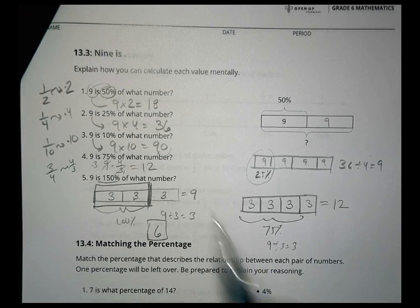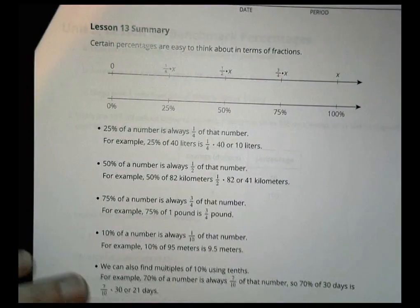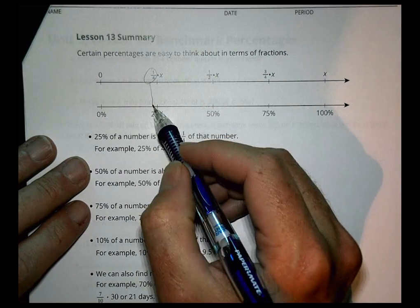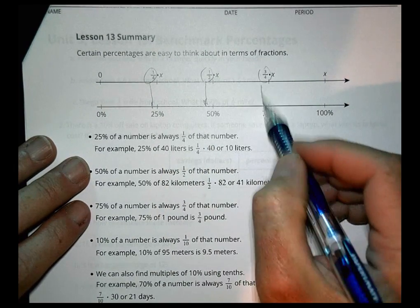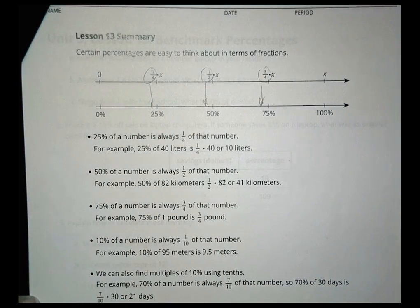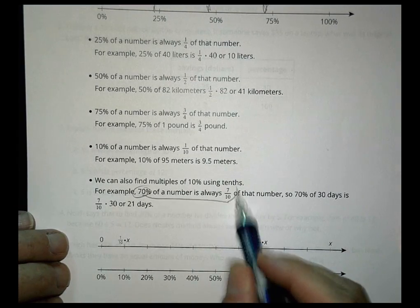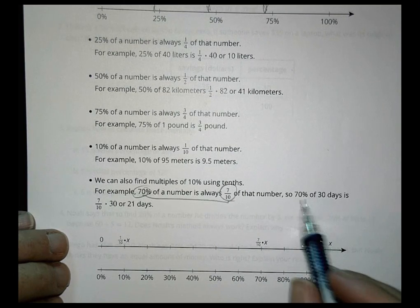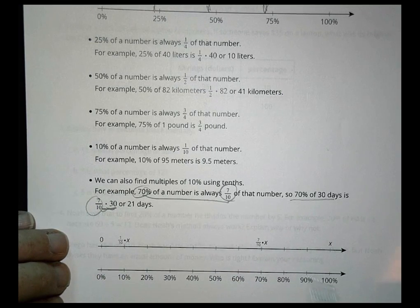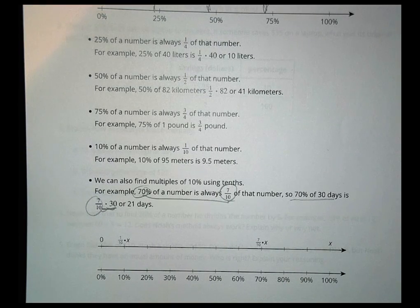I'm going to stop right there. Let's look at the summary, and then we'll go on to tonight's homework. So certain percentages are easy to think about in terms of fractions. 1 fourth is 25%, 1 half is 50%, 3 fourths is 75%, and so on. We can also find multiples of 10% using 10ths. So like 70% of a number is 7 tenths of that. We're going to pause there, and we're going to do some practice with this on tonight's homework assignment.